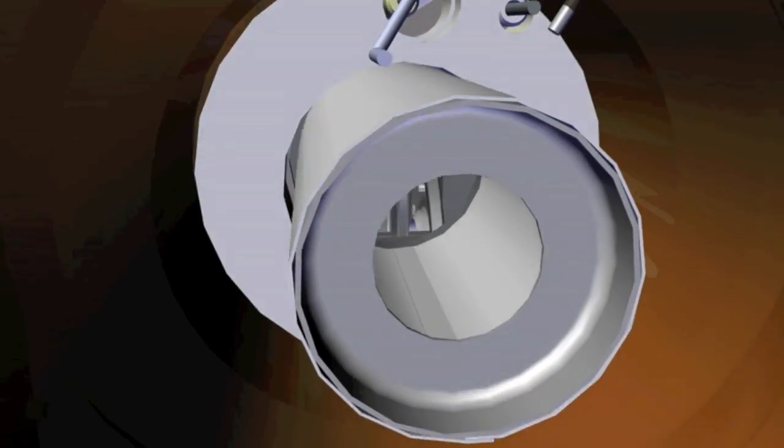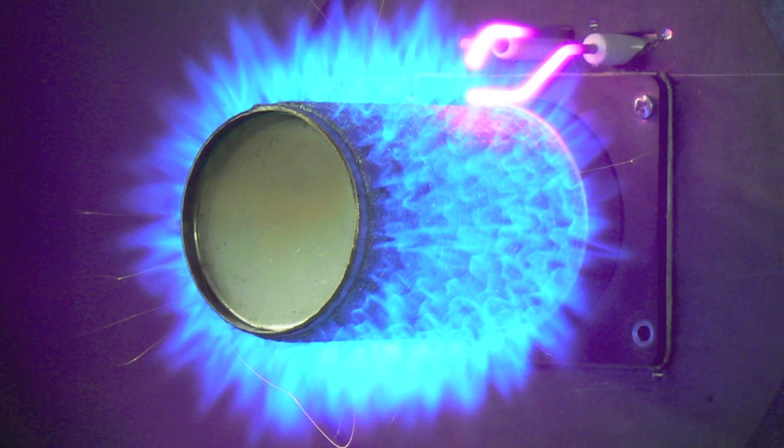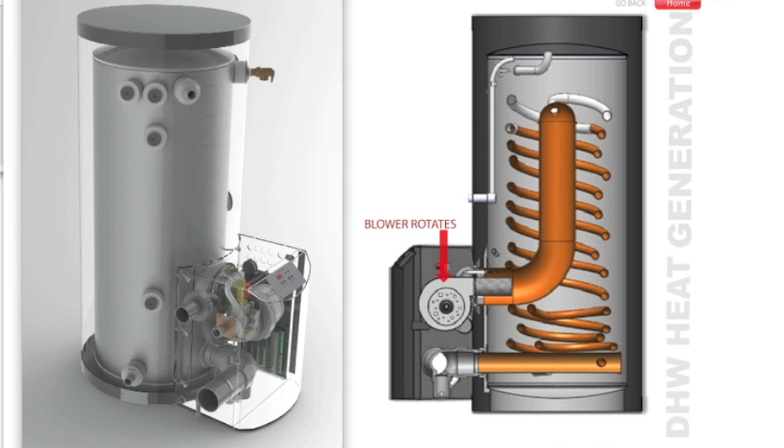These unique flue gas channels carry supercharged heat in excess of 2,000 degrees Fahrenheit from the burner up the 5-inch diameter combustion channel and back down the spiraling tubes that transfer heat to the water surrounding each tube to produce very efficient heat transfer to the water.